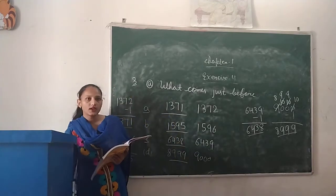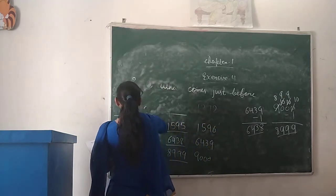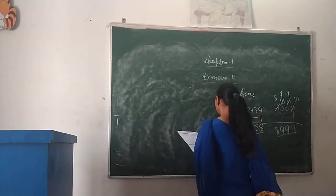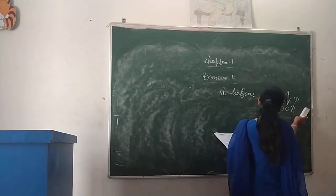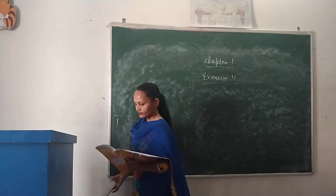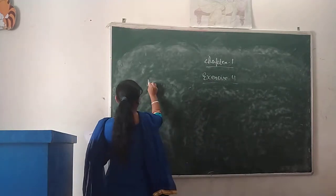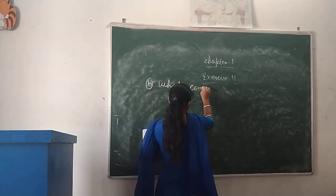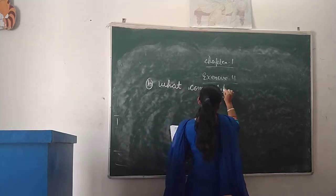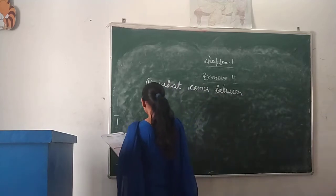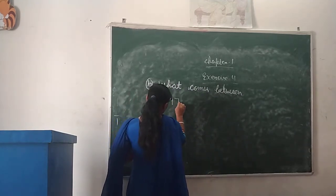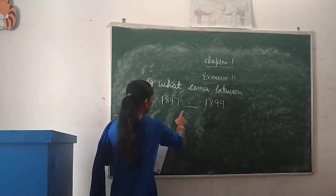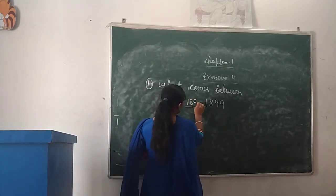Next: what comes between? We have numbers and we need to find what comes between them. For example, between 1,897 and the next number, we add 1 to get 1,898.